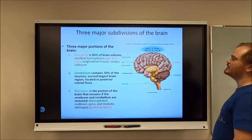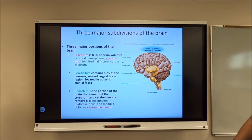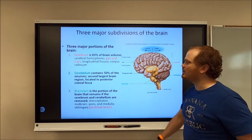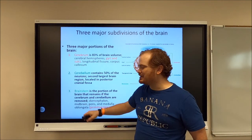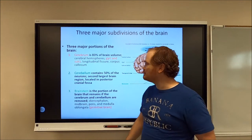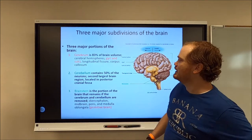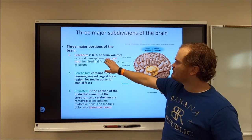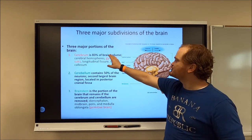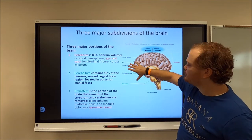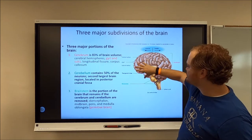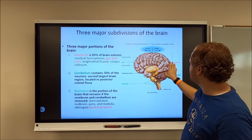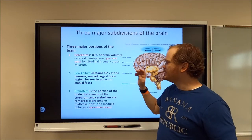Three major subdivisions of the brain: the cerebrum, the cerebellum, and the brainstem. The cerebrum makes up most of the brain's volume. When you think of a brain's wrinkly surface — all of that up here — that's all cerebrum.